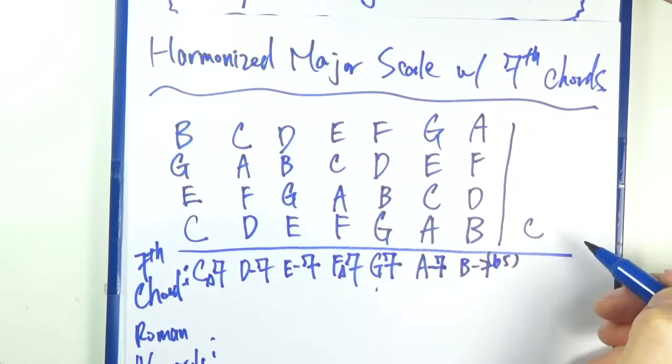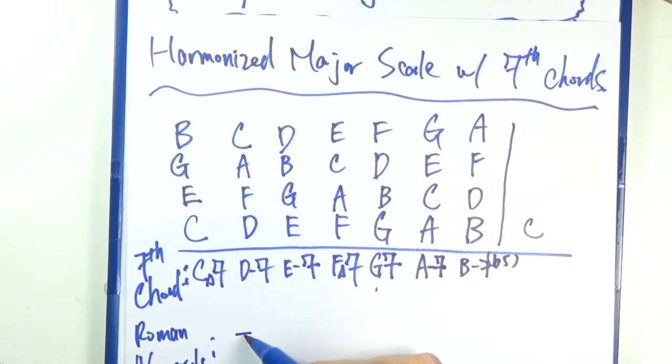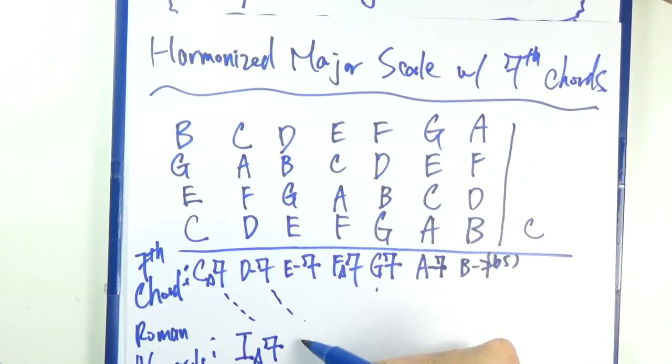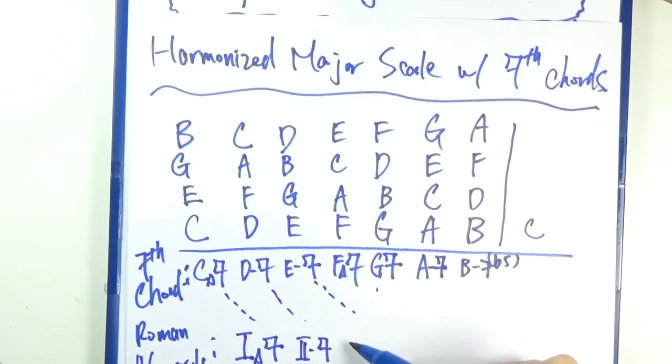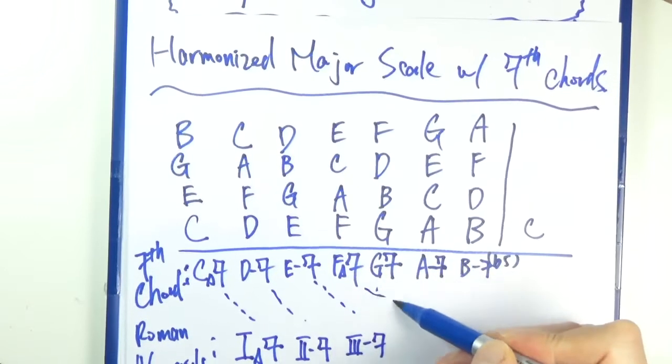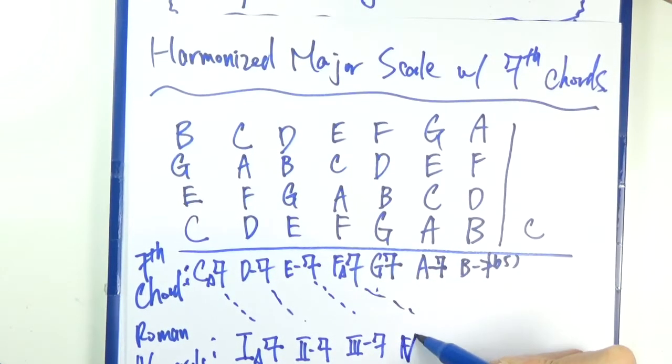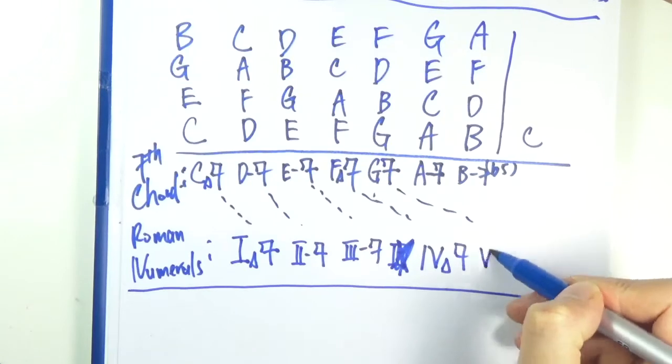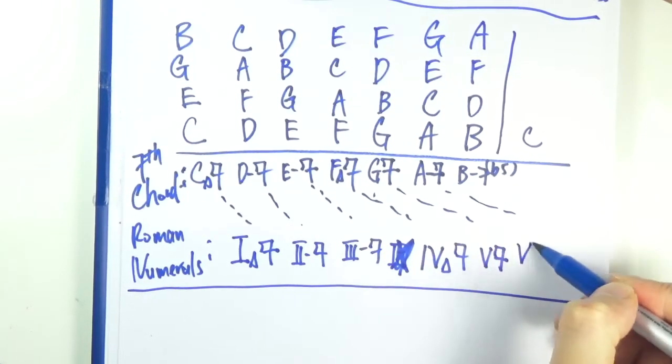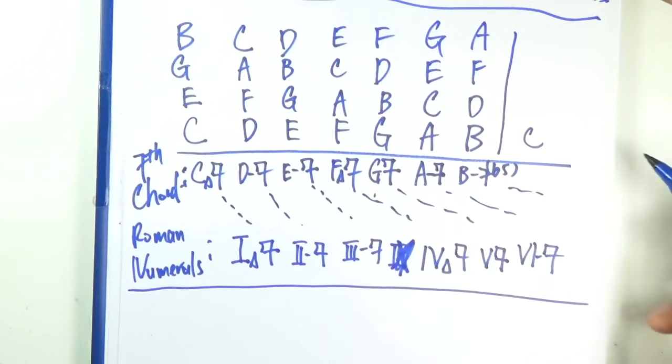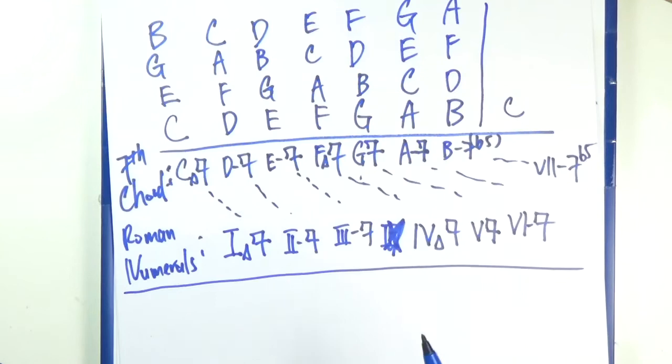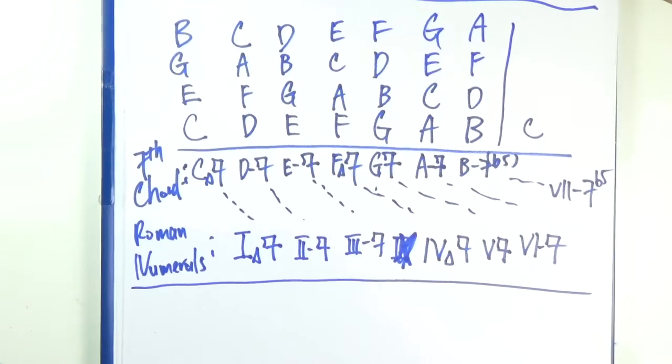Let's do a Roman numeral analysis. C major seven, that should be a one major seven. D minor, that should be a two minor seven. E minor seven, that should be a three minor seven. F major seven, that should be four major seven. That G seven should be a five seven. A minor seven should be a six minor seven. B minor seven flat five should be a seven minor seven flat five. This is the formula that you would get if you harmonize any major scale with seventh chords.